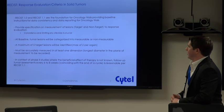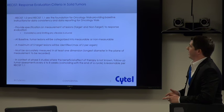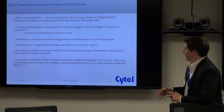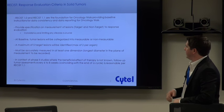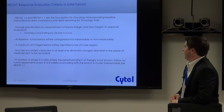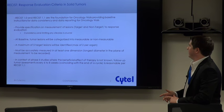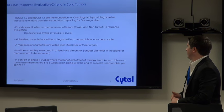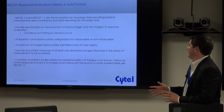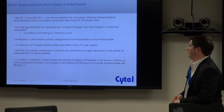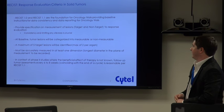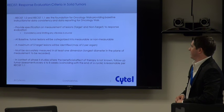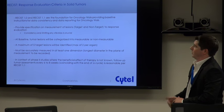Another major change in RECIST 1.1 is that it included instructions on nodal lesions, specifically measuring the short axis. There were a number of different changes highlighted in RECIST 1.1, but those are two of the more major ones. From RECIST 1.1, in the context of phase two studies where the beneficial effect of therapy is not known, follow-up assessments every six to eight weeks coinciding with the end of a cycle is reasonable. For both of my studies, cycles are four weeks, so they'll assess at baseline within 28 days of the start of study treatment, and then every two cycles — so every eight weeks — for tumor assessment follow-up.